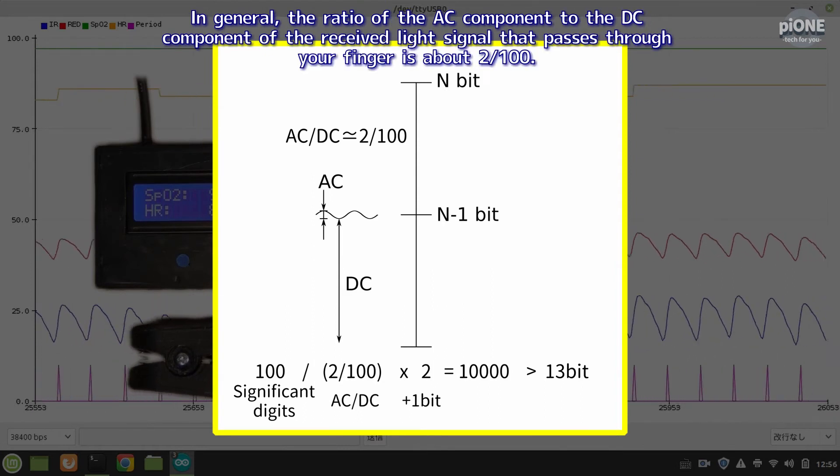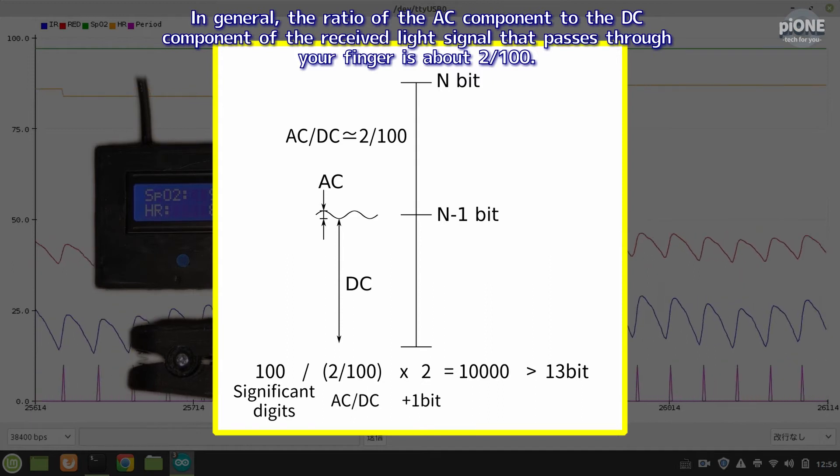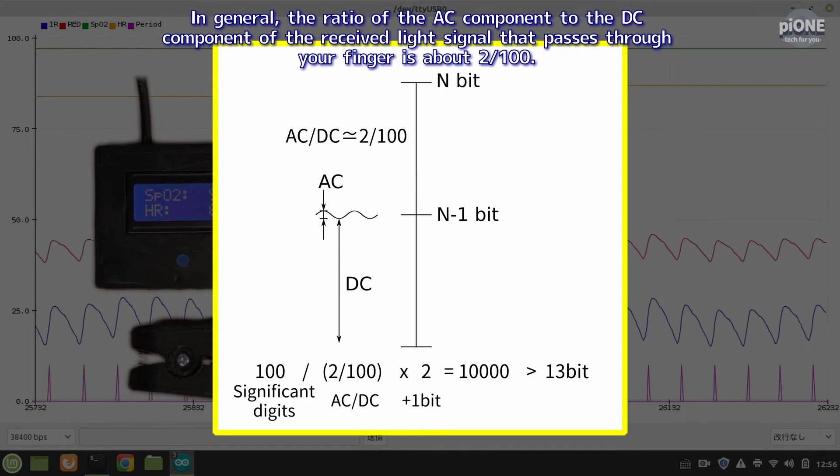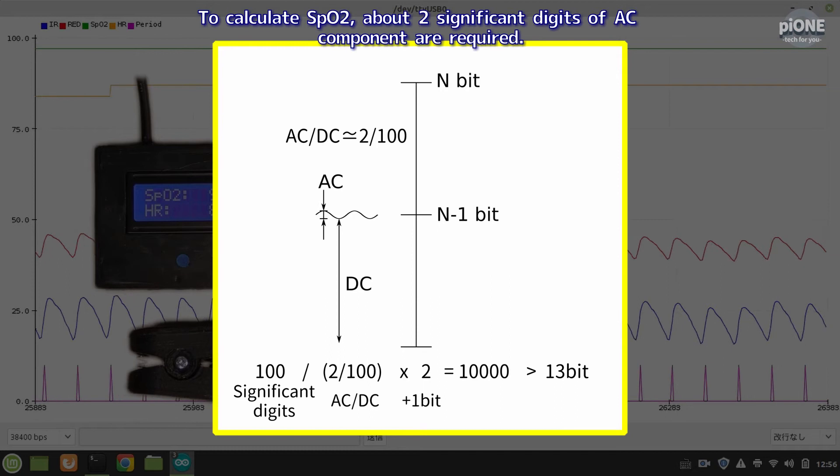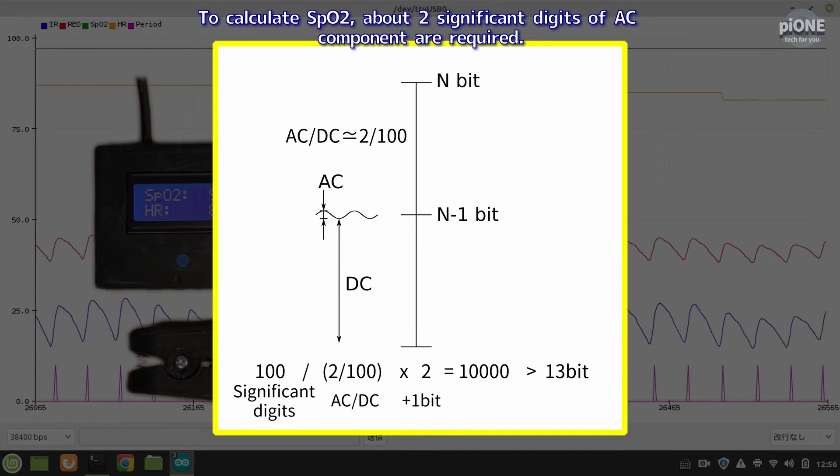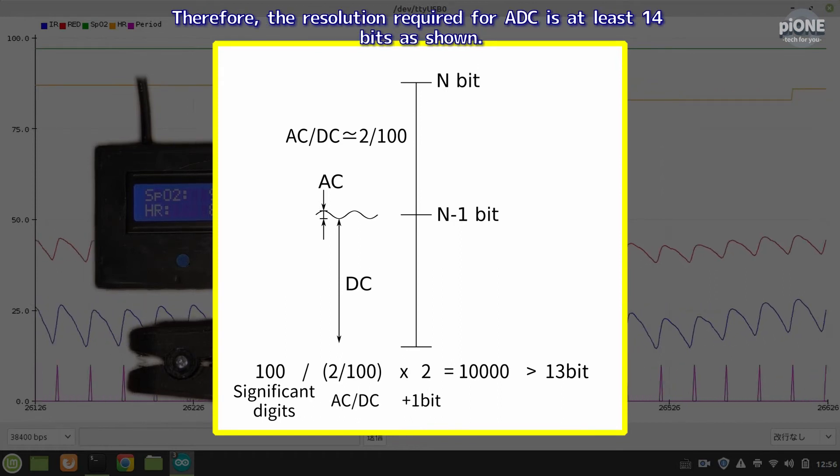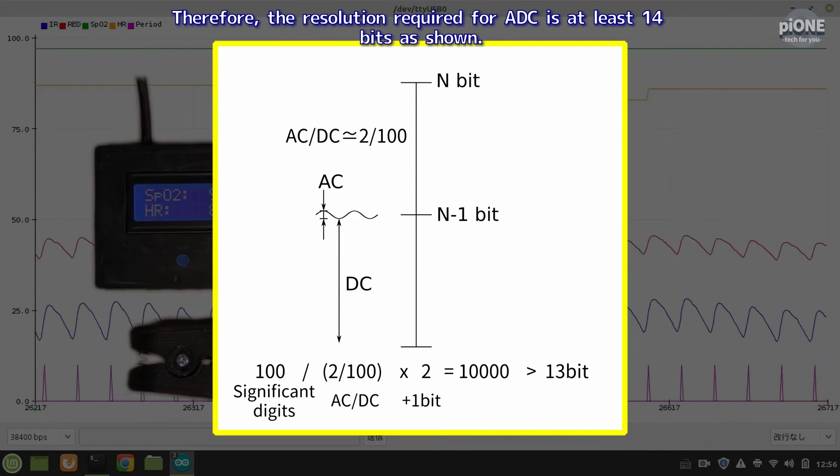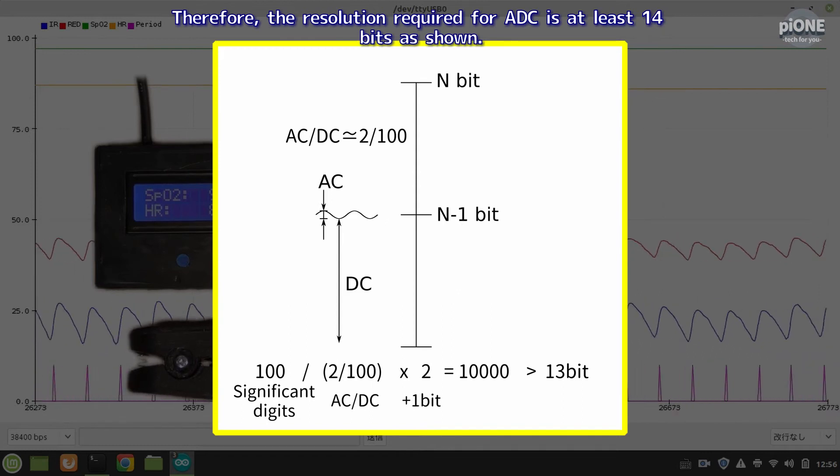In general, the ratio of the AC component to the DC component of the received light signal that passes through your finger is about two one-hundredths. To calculate SPO2, about two significant digits of AC component are required. Therefore, the resolution required for ADC is at least 14 bits as shown.